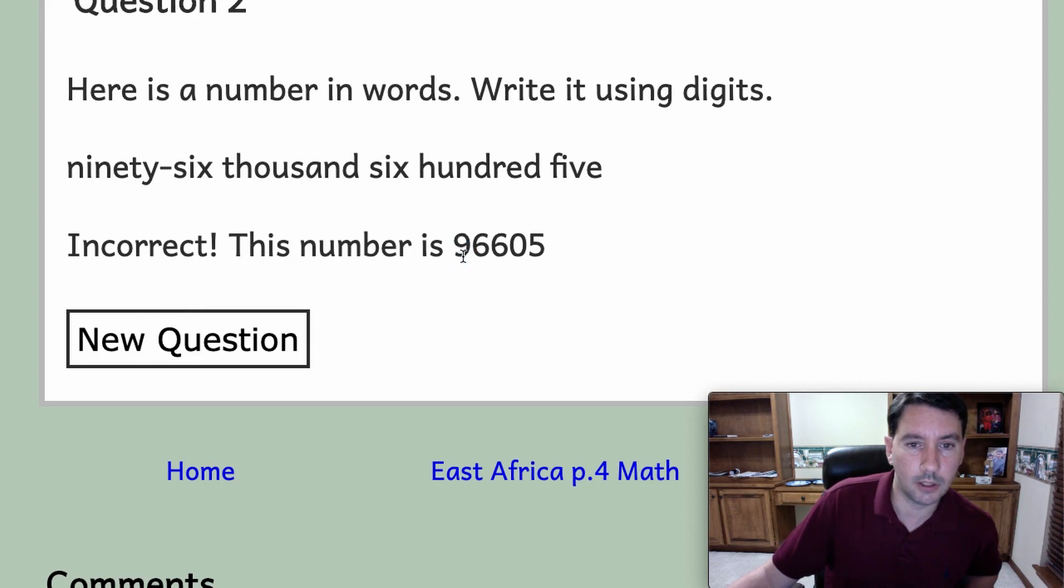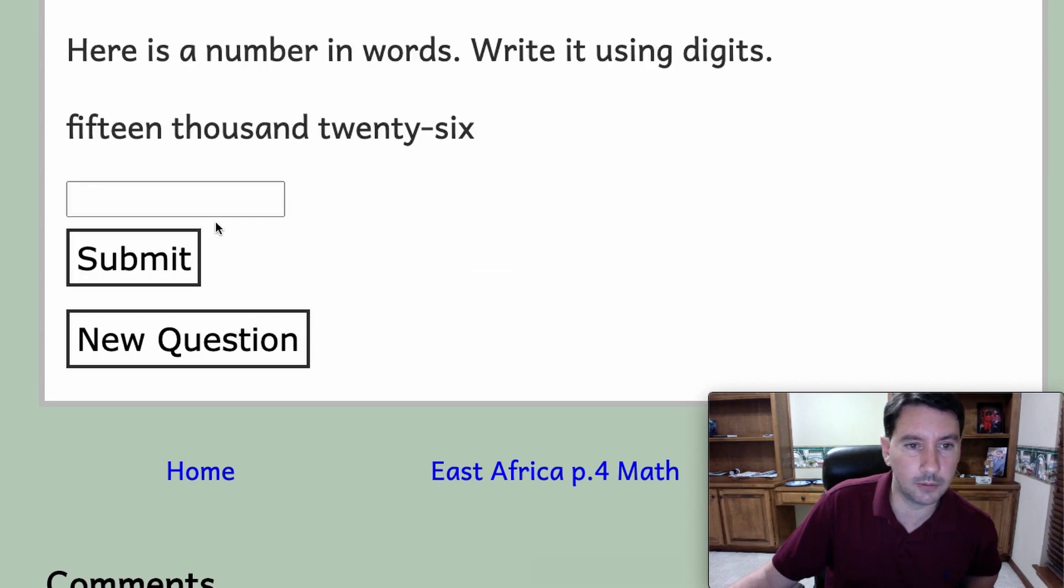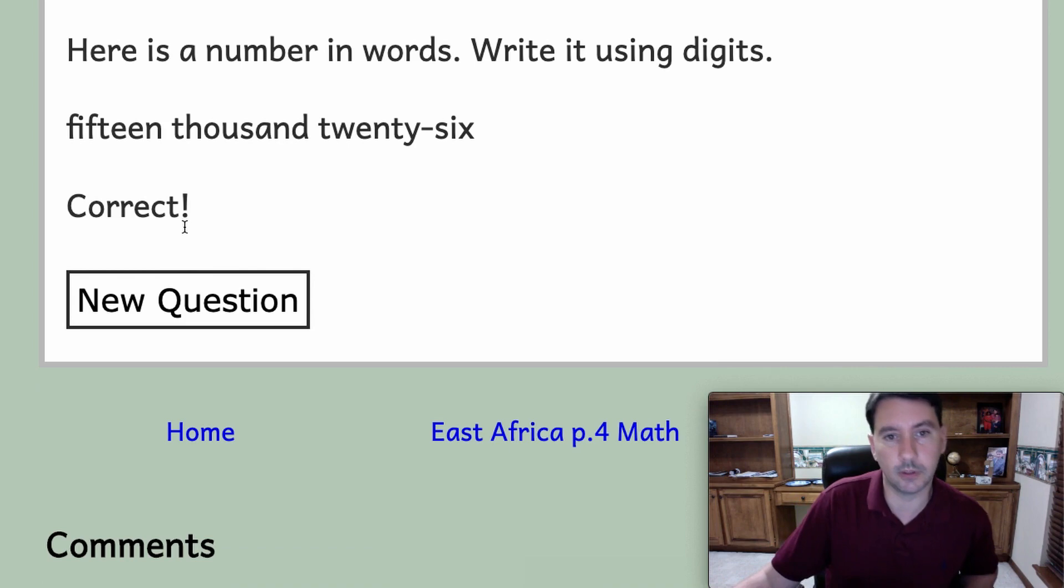It doesn't put the comma but that's okay because it's not going to grade you on commas. So 96,605. I should maybe do one example like that. This one says fifteen thousand twenty-six. If you don't put a comma and I submit this, I'm still going to count you as correct.